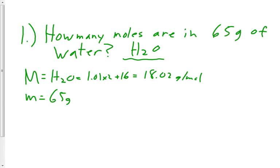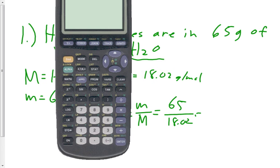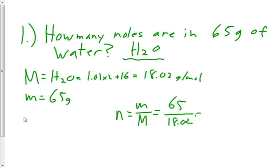If we're asked to calculate moles, which part of the equation is moles? N. The only thing in there that starts with, well, one of the things that starts with M, and it's represented by N. Little m over big M, 65 over 18.02. 65 divided by 18.02. 3.61 moles.